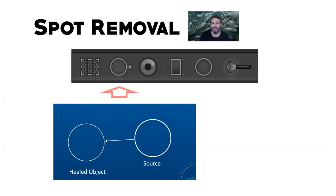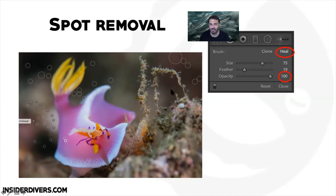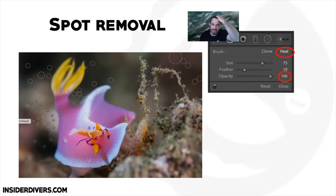You can change the location of the source. We're using Heal rather than Stamp. Clone stamp is not selected but Heal is selected. You can set up your feather and opacity — I'll show you in a moment. Basically you just click click click on all these different backscatter items that bother you. Lightroom has made amazing progress with that in the last few years. When I started teaching this three or four years ago we always went to Photoshop for backscatter — now you can even remove divers.